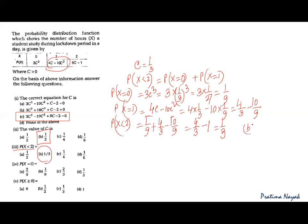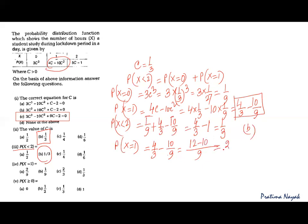Now coming to the fourth part: P(X = 1), which we already calculated. It is 4/3 − 10/9. The LCM is 9, giving us 12/9 − 10/9 = 2/9. So the answer is 2/9.